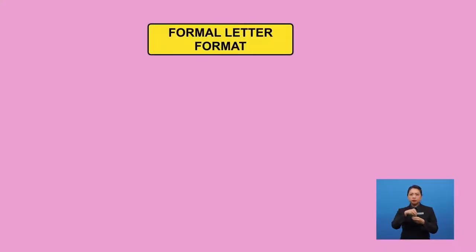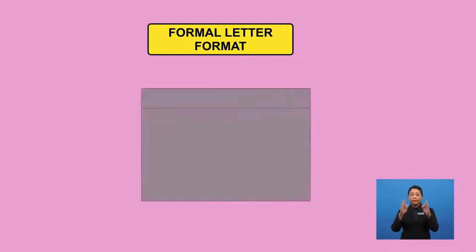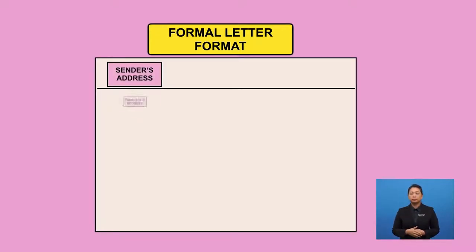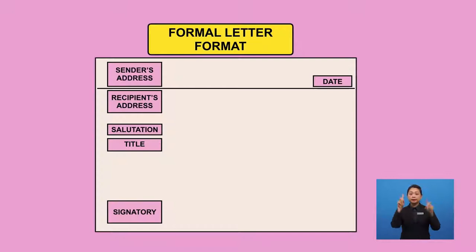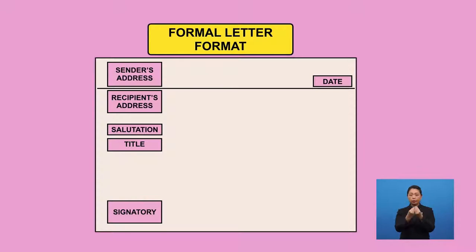This is the page of your letter. Let us look at this task closely. The address accounts for format marks. Let us find out what else in the letter carries format marks. These are the items for format: sender's address, recipient's address, date, salutation, title, and signatory. Remember how to write them and their positions. You must not get them wrongly written as they account for three marks in total, so do get them right.